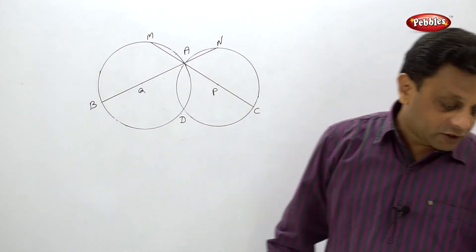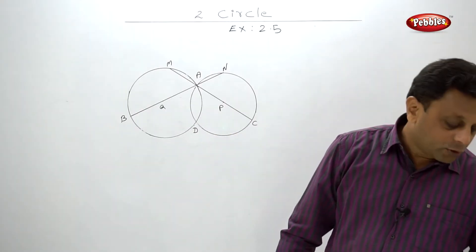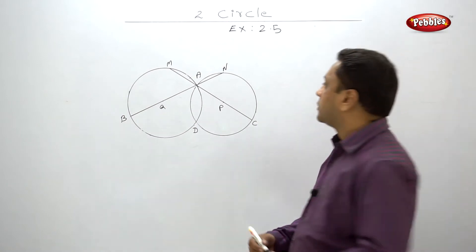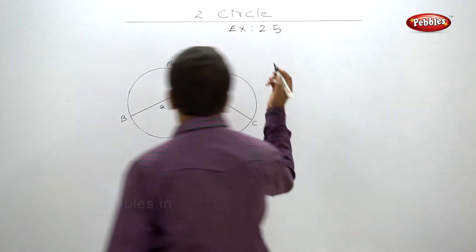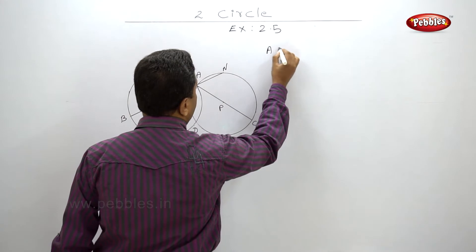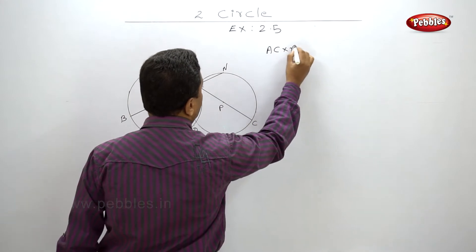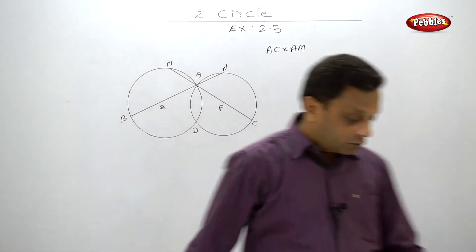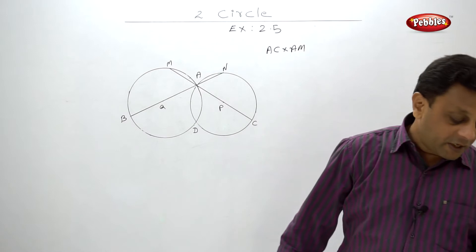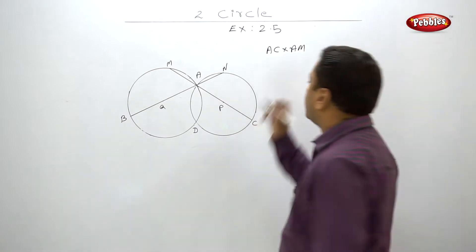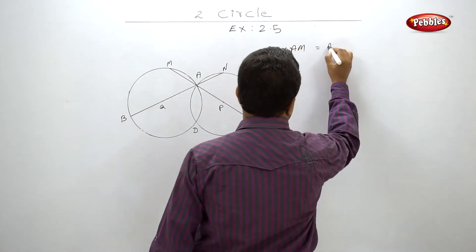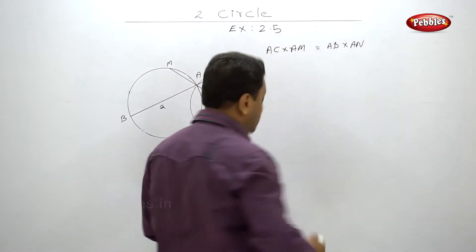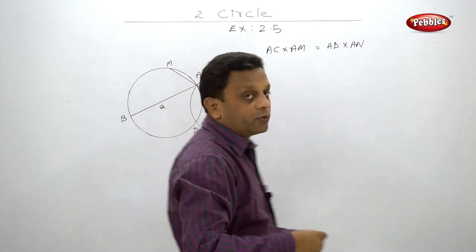What we have to prove: we have to prove that AC into AM is equal to AB into AN.